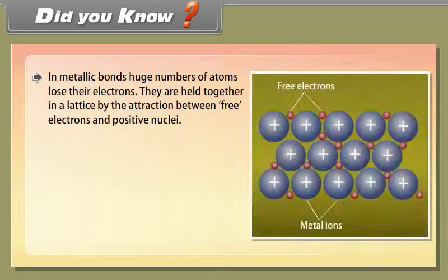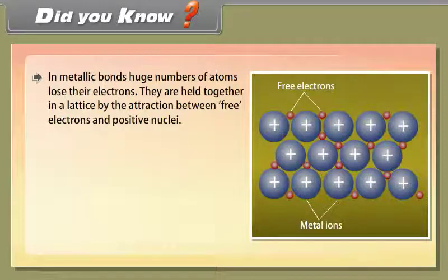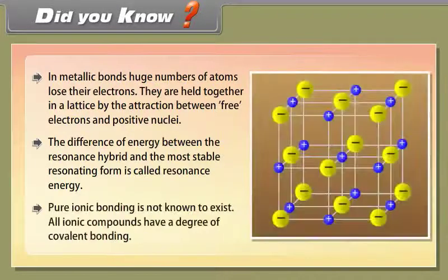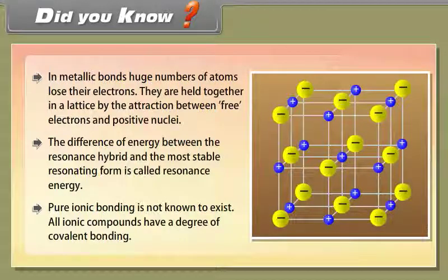Did you know? In metallic bonds, a huge number of atoms lose their electrons and are held together in a lattice by the attraction between free electrons and positive nuclei. The difference in energy between the resonance hybrid and the most stable resonating form is called resonance energy. Pure ionic bonding is not known to exist — all ionic compounds have a degree of covalent bonding.